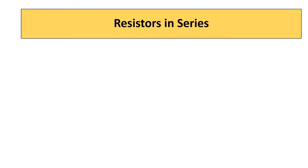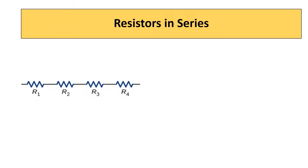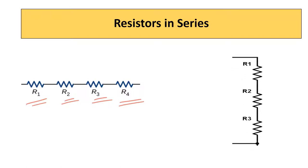Say you have two resistors R1 and R2. If R1 and R2 are connected end to end, you will call this type of connection a series connection. R1, R2, R3, and R4 are connected in series. Series connection means end to end connection.